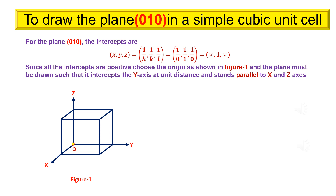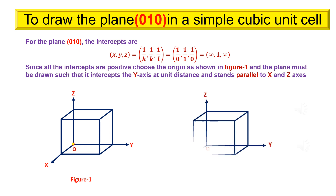For the plane (0 1 0), the intercepts are x, y, z equals infinity, 1, infinity. Since all the intercepts are positive, choose the origin as shown in figure 1. Then draw the plane such that it intercepts the y axis at unit distance and stands parallel to x and z axes.